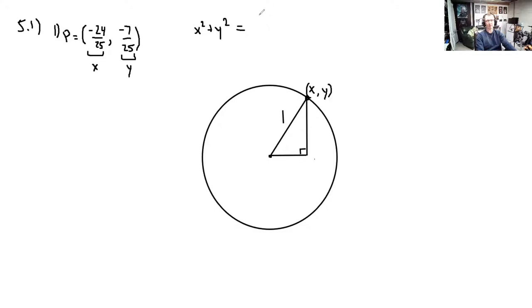Negative 24 over 25 squared is the same as 24 squared over 25 squared. I am not going to multiply those out. Then we add to that 7 squared over 25 squared. So that simplifies to, the denominator's 25 squared. They have the same denominator, so we can just bring them together. And on top, we've got 24 squared plus 7 squared.